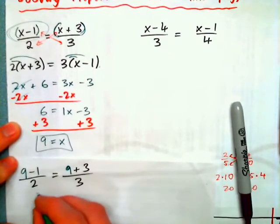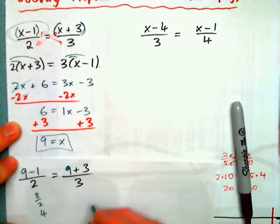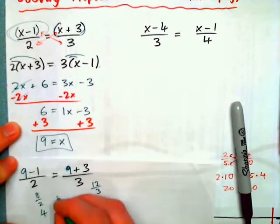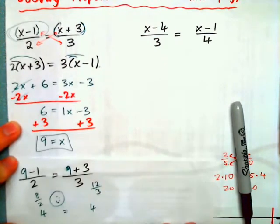9 minus 1, that's 8. 8 over 2 is indeed 4. 9 plus 3 is 12. 12 over 3 is indeed 4. And so we have 4 equals 4. That is the correct answer. Smiley face.